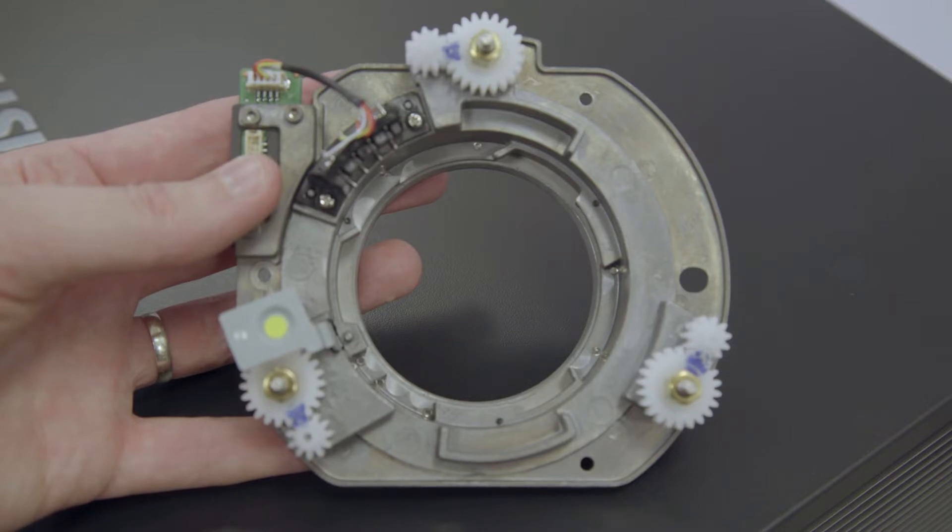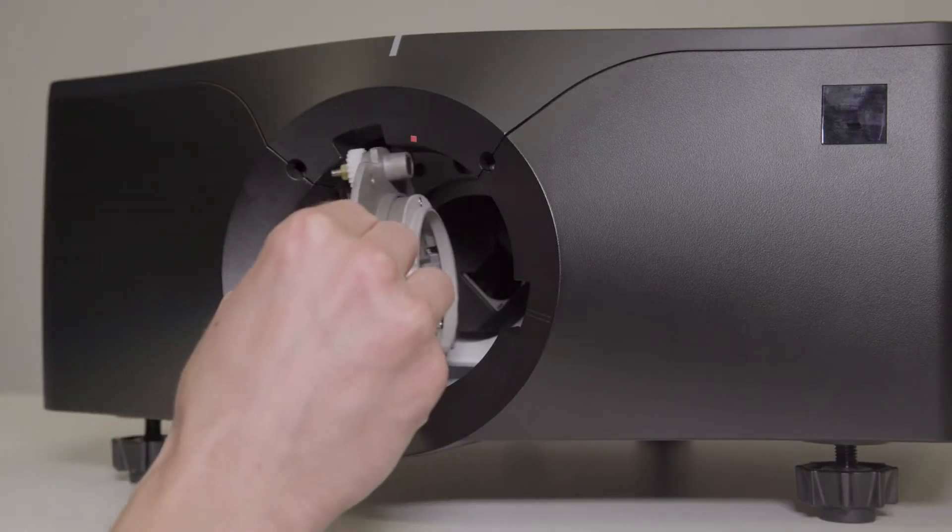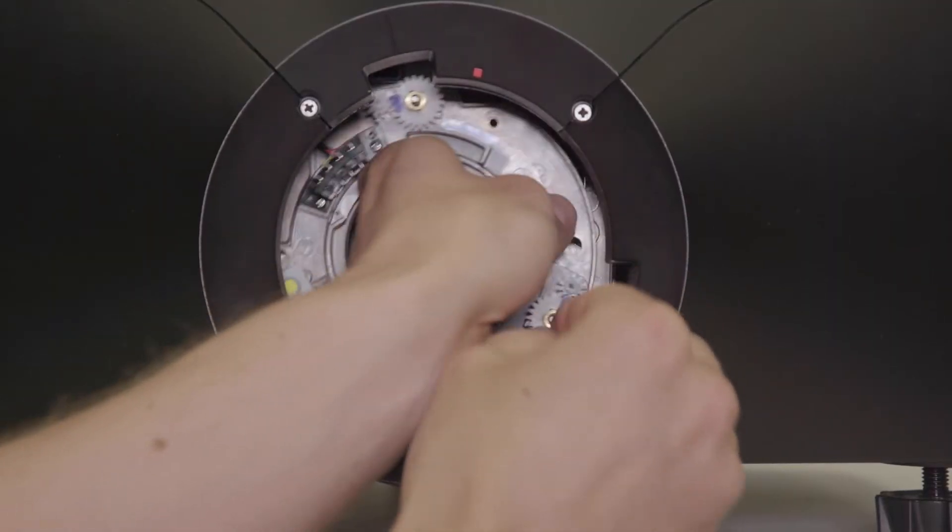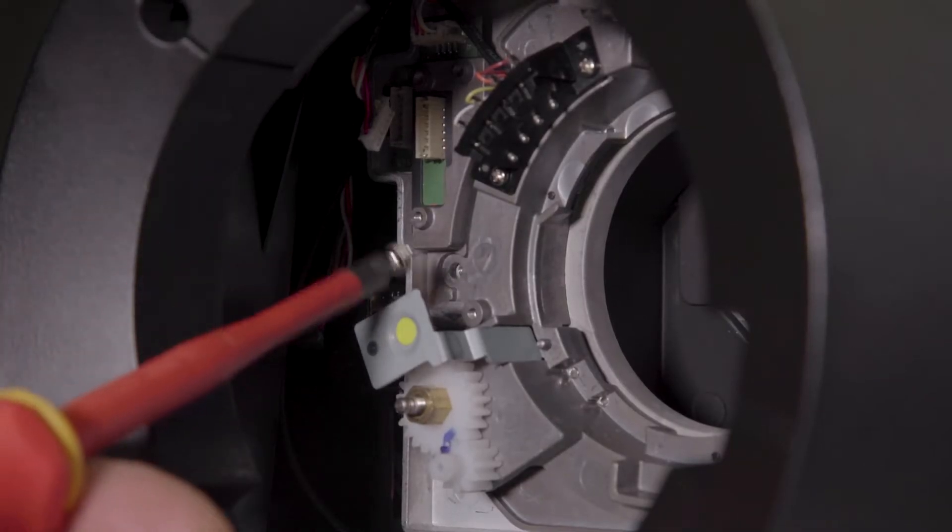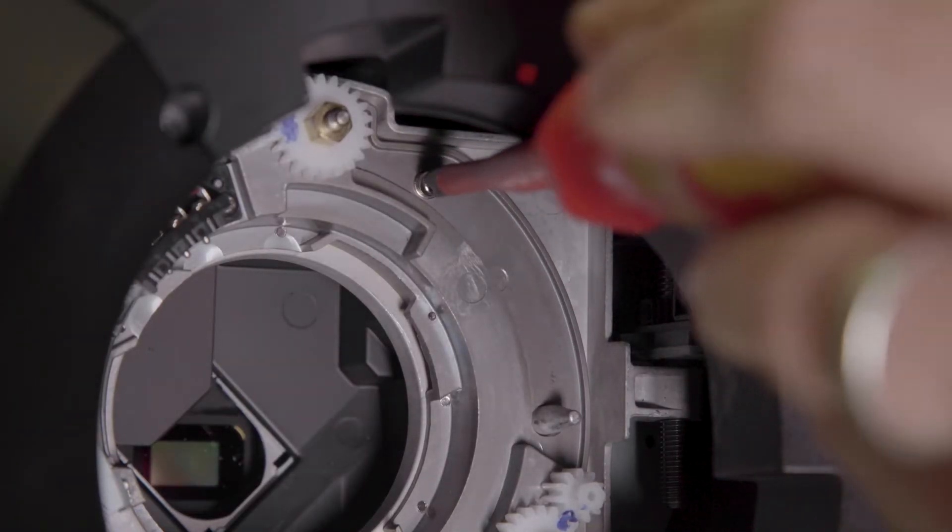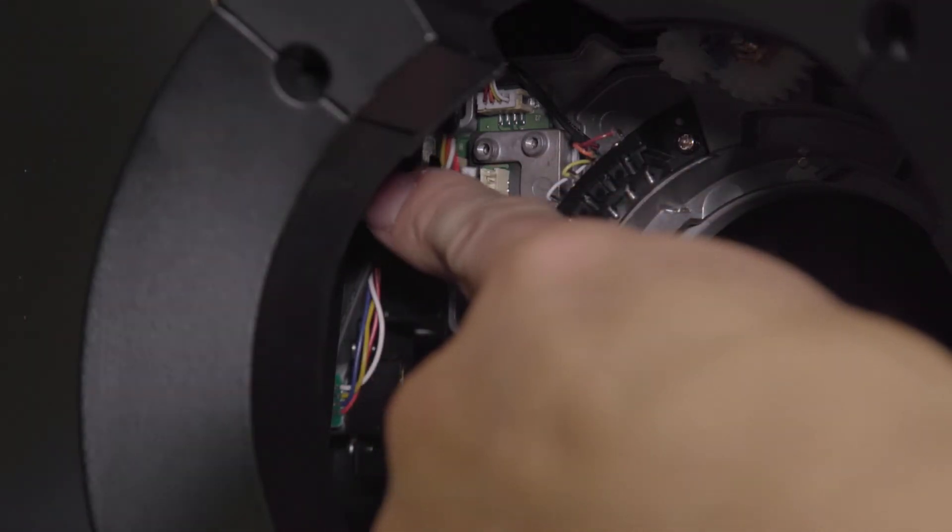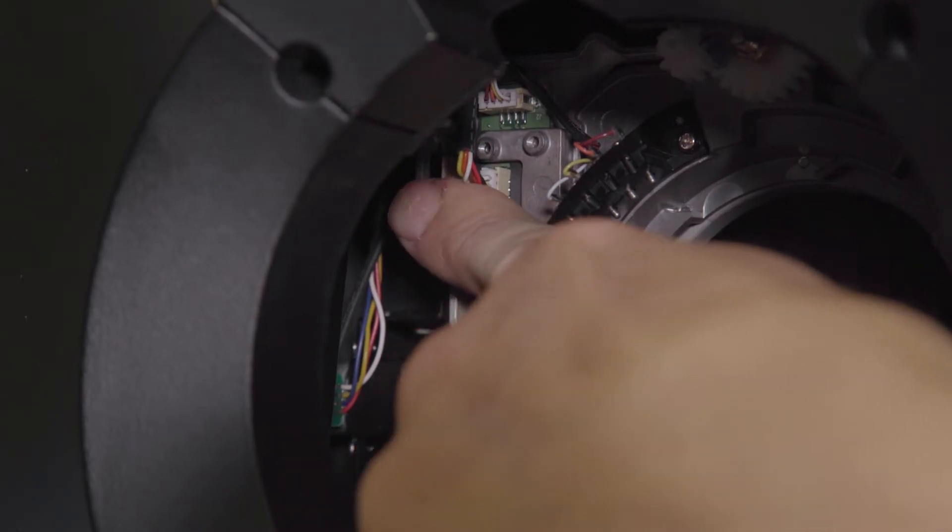Take the new UST adapter and then carefully insert into the projector. Then install the three screws from the previous adapter to hold it into place. Then reconnect the connector which was previously disconnected into the new adapter.